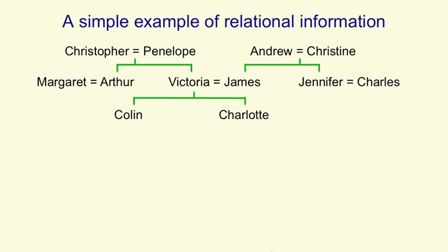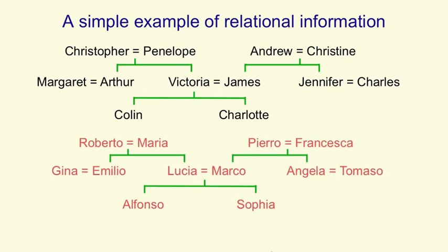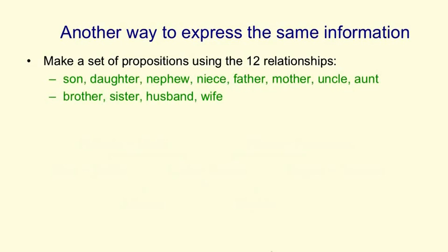This diagram shows a simple family tree in which, for example, Christopher and Penelope marry and have children Arthur and Victoria. What we'd like is to train a neural network to understand the information in this family tree. We've also given it another family tree of Italian people, which has pretty much the same structure as the English tree. And perhaps when it tries to learn both sets of facts, the neural net is going to be able to take advantage of that analogy. The information in these family trees can be expressed as a set of propositions if we make up names for the relationships depicted by the trees.